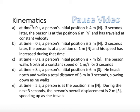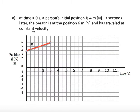Okay, hopefully you've tried that. Let's look at the first example. Example A. At time equals 0 second, a person's initial position is 4 meters north. So, we put a dot at 4 meters north. 3 seconds later, the person is at the position 6 meters north. 3 seconds later, 6 meters north. And has traveled at constant velocity. So, whenever you see the term constant velocity, that means you connect the two dots with a straight line. The slope has to be constant, basically. That's what that means.